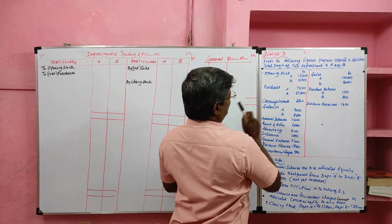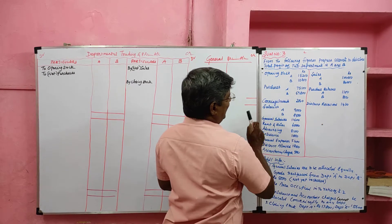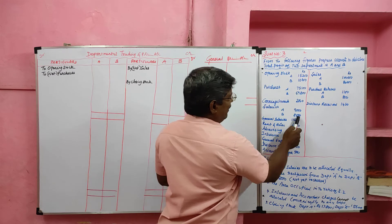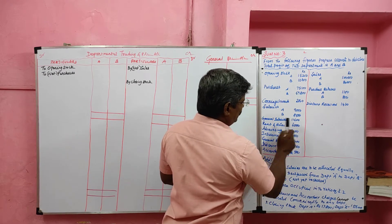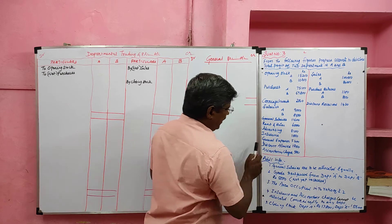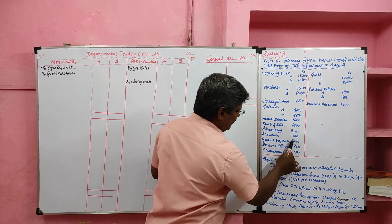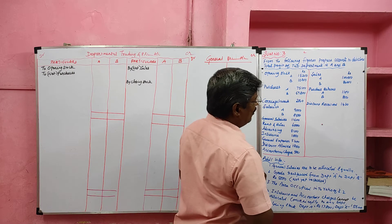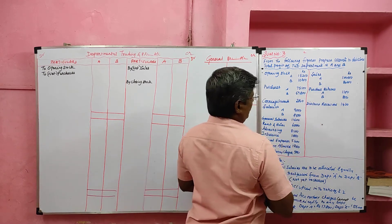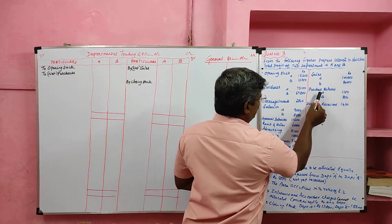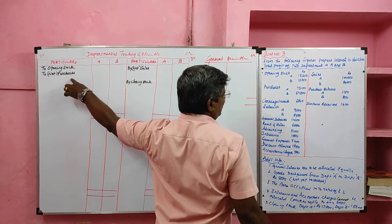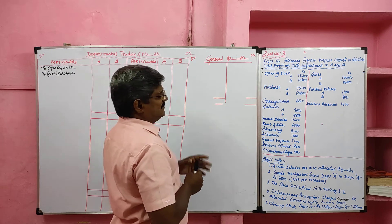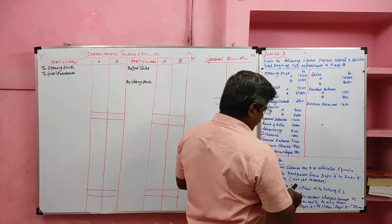Opening stock, purchases, carriage inward. Salaries given individually for department A and department B. General salary given altogether. Rent and rates, advertisement, insurance, general expenses, discount allowed, and accountancy charges are all given altogether. Sales for respective departments are given. Then purchase returns — purchase minus purchase return, we have to record net purchase in the trading account debit side. If sales returns are given, we have to record the net sales. Then discount received.